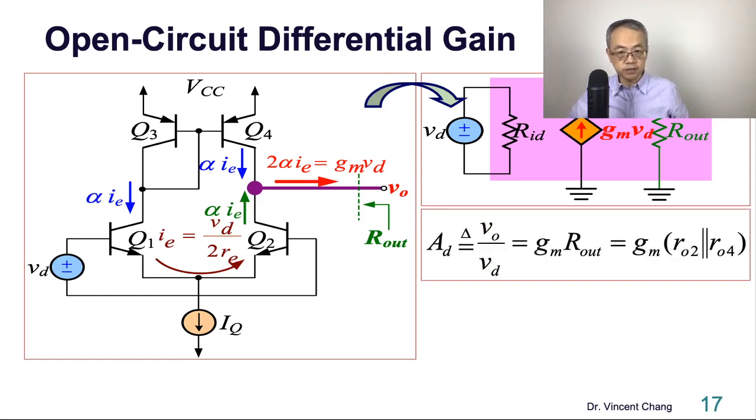So what is the output resistance? If you're looking from the output terminal, the answer is the output resistance of the individual transistor O2 in parallel with O4.